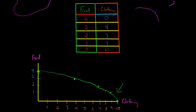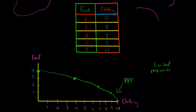This PPF tells us that at each of these points, it's showing us the maximum amount of goods and services we're able to produce given our current level of resources. Remember, we have limited resources — there are only so many people in our group, and maybe there's only so much food on the island — so we have to make tradeoffs.